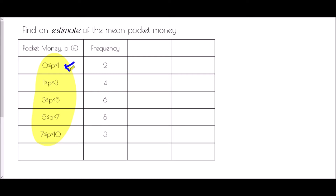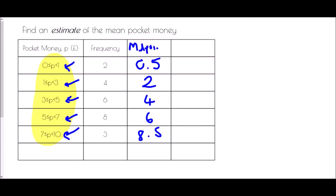We need to estimate what each group is actually worth. If a group is between zero and one pound, the best estimate is right in the middle — that's 0.5. In the second group, between one and three pounds, the middle is two. In the next group, between three and five, we go with four. Between five and seven, we go with six. Between seven and ten, halfway is 8.5. We always use the midpoint when estimating the mean because it gives the best representation of the group.